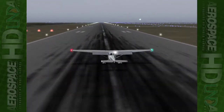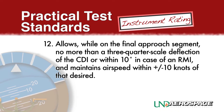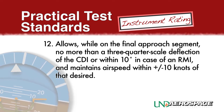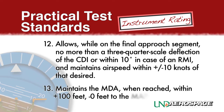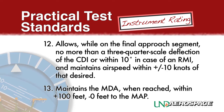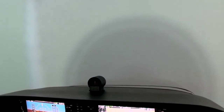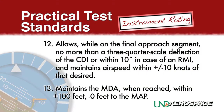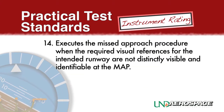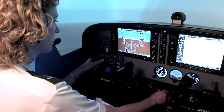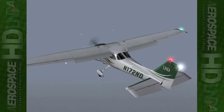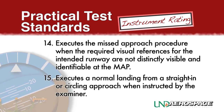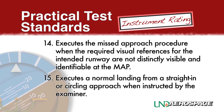While on the final approach segment, allows no more than a three-quarter scale deflection of the CDI or within 10 degrees in the case of an RMI, and maintains airspeed within plus or minus 10 knots of that desired. Maintains the MDA, when reached, within plus 100 feet minus 0 feet all the way to the missed approach point. Executes the missed approach procedure when the required visual references for the intended runway are not distinctly visible and identifiable at the missed approach point. Executes a normal landing from a straight-in or circling approach when instructed by the examiner.